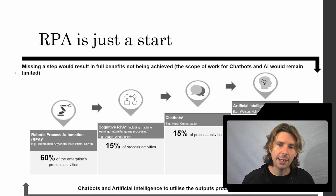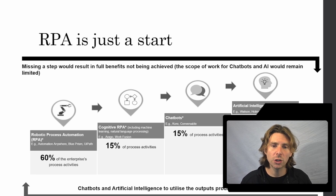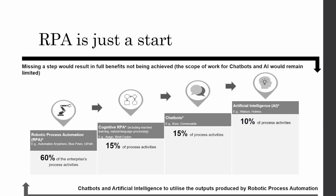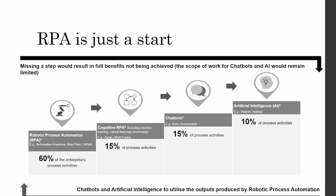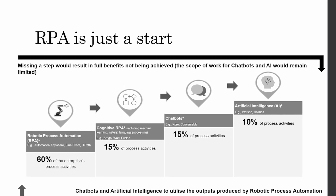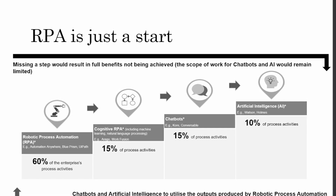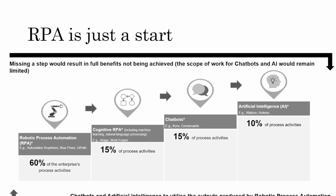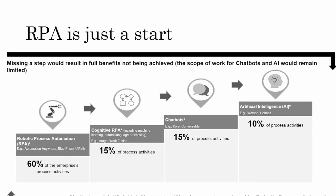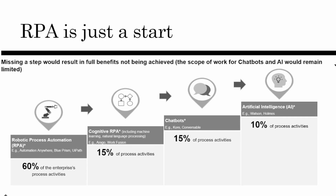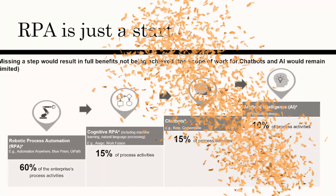Let's take a look at how RPA starts and how it evolves. It is important to understand that RPA is just the beginning of the evolution chain to get to artificial intelligence, or end-to-end automation. Usually with automating the manual and repetitive with robotic process automation, we get 60% of the activities done. Then once we add cognitive RPA with some machine learning, natural language processing, or chatbot functionality, we start automating more and more until we reach artificial intelligence and have automated pretty much the entire process.